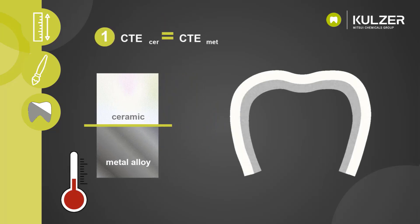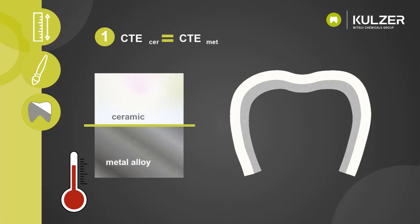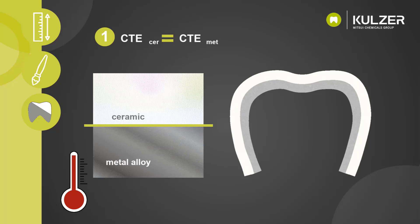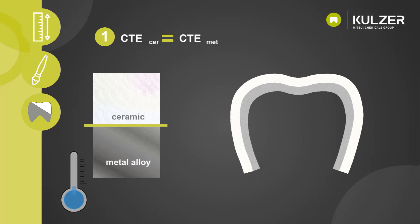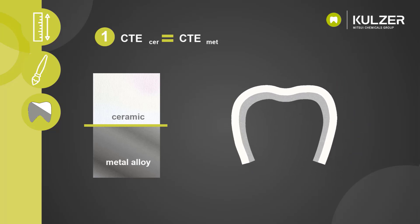First, the CTE of the ceramic and the metal alloy is the same. This almost never happens, but theoretically both materials expand by the same proportion when heated and contract again when cooled. In terms of our dental crown, both materials contract to the same original size. The chemical bond and the micro-retentions create an adhesive bond, however this is very low since the tension between the individual substances is absent.